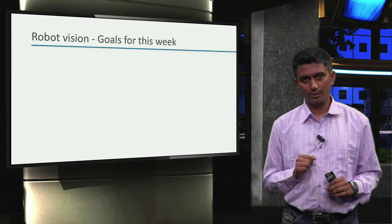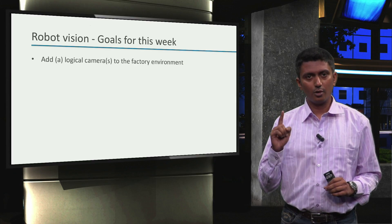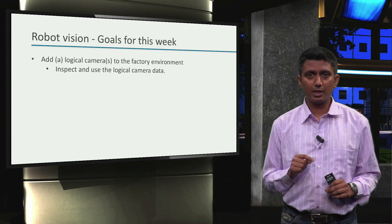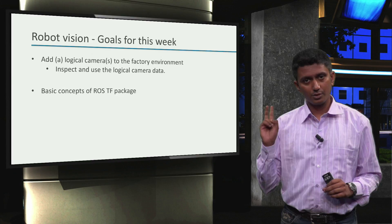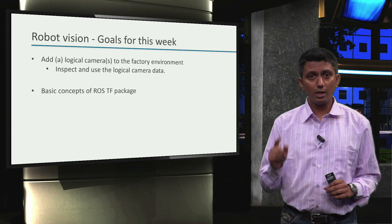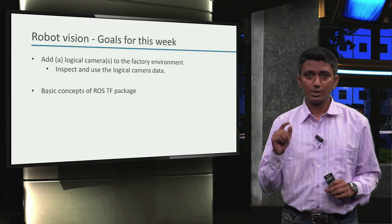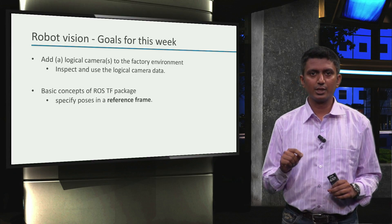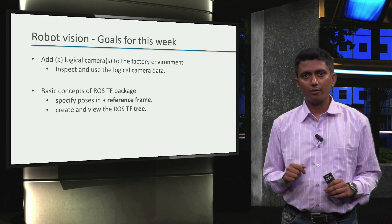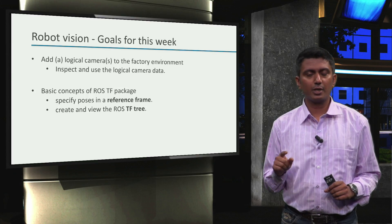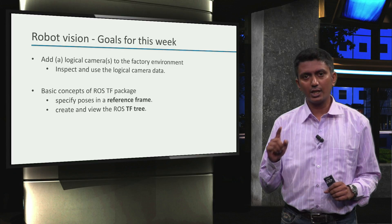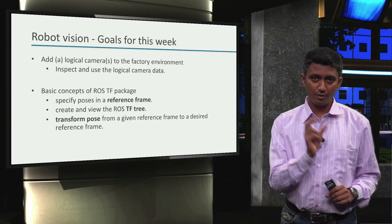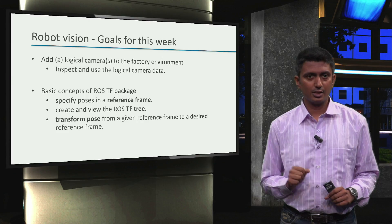Let's define the goals for this week. Our first goal is to add one or more logical cameras to our factory environment, and once we do that, we will learn how to inspect and use the logical camera data. Our second goal is to learn the basic concepts of the ROS TF package, which is short for transforms. Particularly, we will learn how to specify a pose in a reference frame of our choice, how to create and view the TF tree, and how to transform a given pose of any object from one reference frame to another as desired by our ROS application.